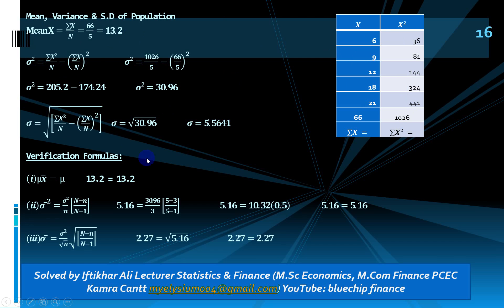Verification: sample mean equals population mean, so 13.2 = 13.2. For variance of the sample mean (without replacement), the formula is: population variance / sample size × (N − n)/(N − 1). Putting in the values confirms equality with the sample variance of 5.16, and √5.16 = 2.27 confirms the standard deviation.